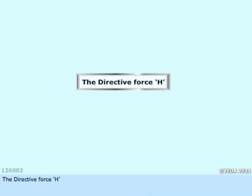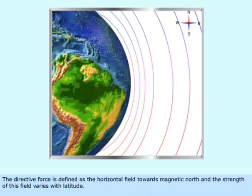The directive force, H, is defined as the horizontal field towards magnetic north, and the strength of this field varies with latitude.